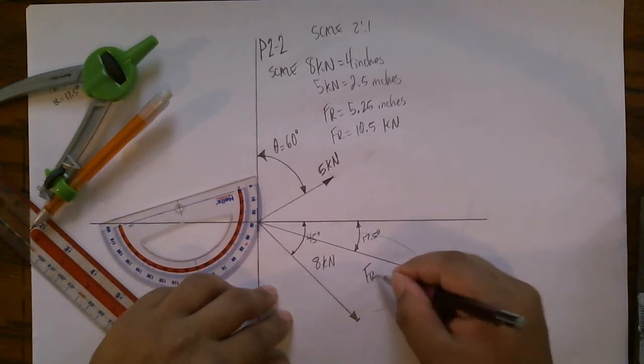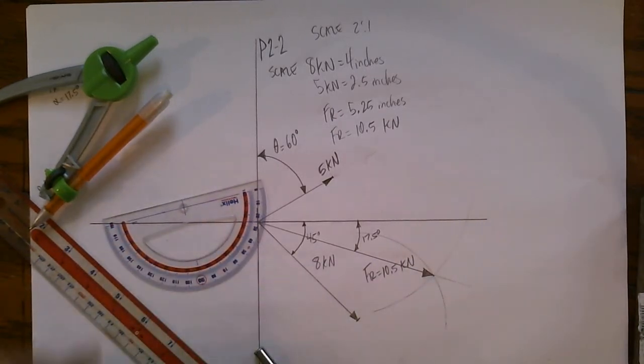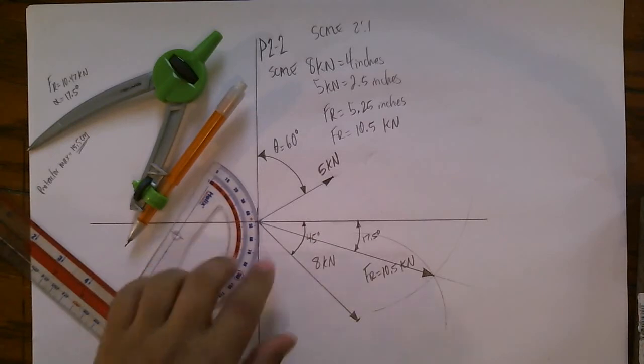And FR is 10.5 kilonewtons, and that is the graphical method without using any calculators, without using any law of sines or law of cosines, just simply draw to scale and measure.